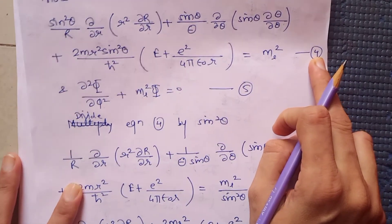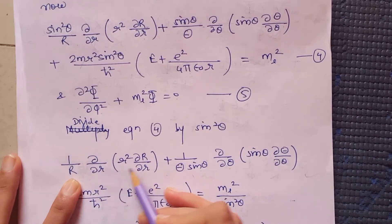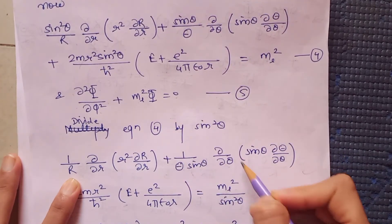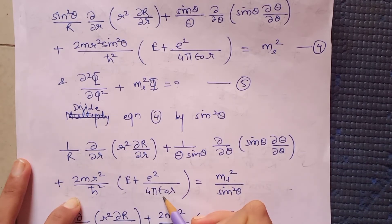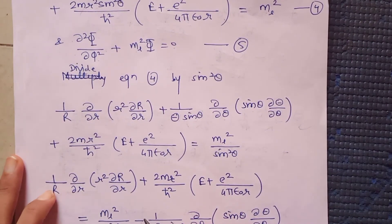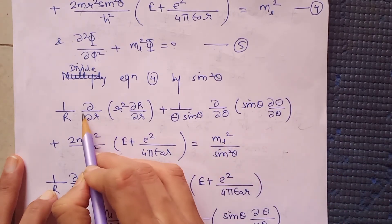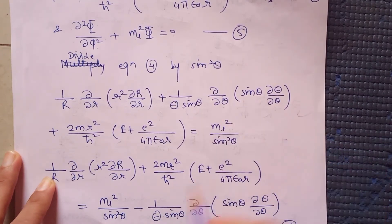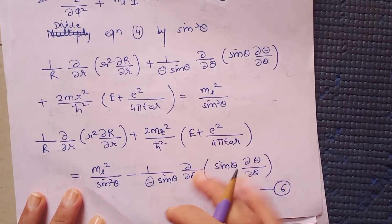We now divide Equation 4 by sin²θ, obtaining: (1/R) ∂/∂r(r² ∂R/∂r) + (1/sinθ·Θ) ∂/∂θ(sinθ · ∂Θ/∂θ) + (2mr²/ℏ²)(E + e²/4πε₀r) = m_l²/sin²θ. Shifting the θ-dependent term to the right-hand side gives Equation 6, where the LHS is a function of r only and the RHS is a function of θ only.